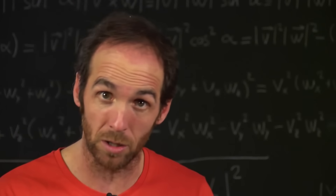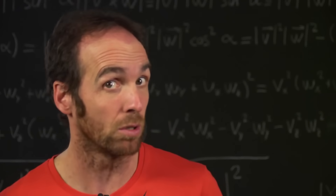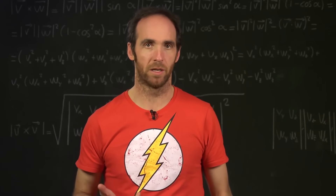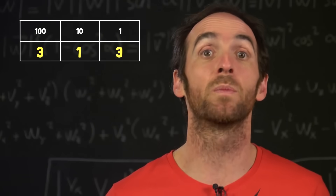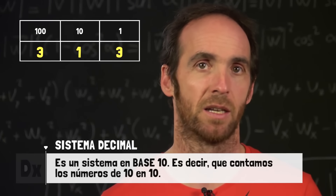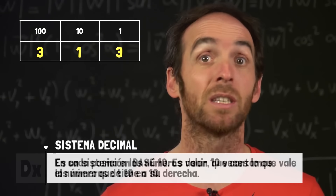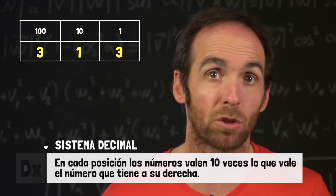If I write 313, the 3 on the right is worth 3, but on the left is worth 300. The 3 on the right is in the units and the 1 in the middle is in the tens and the 3 on the left is in the hundreds. Each column — each position — is worth 10 times what the column to its right is worth, and in each box we have 10 numbers to choose from, from 0 to 9. For those two reasons, our system is called decimal.